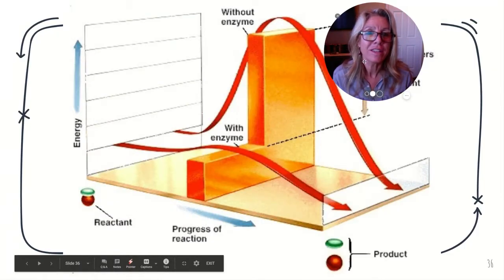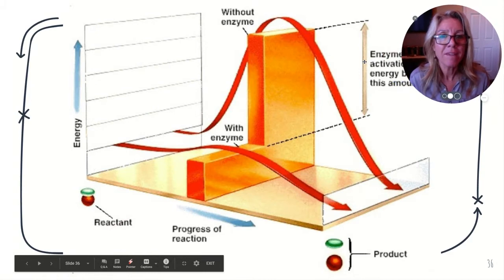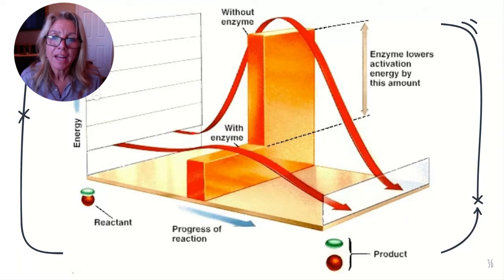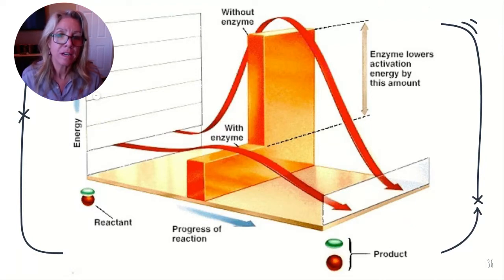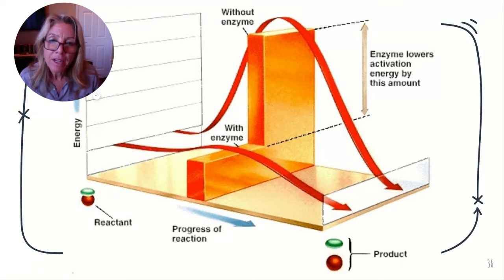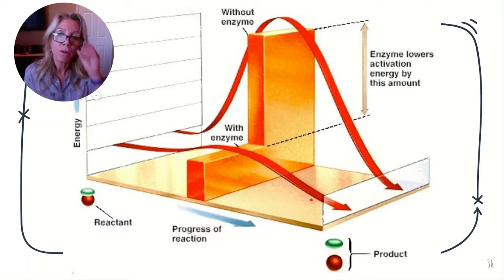On the diagram, you're measuring free energy on the y-axis and progress of the reaction on the x-axis. The blue curve shows the energy of activation without the enzyme — a large hurdle. The tan curve shows it with the enzyme — the hurdle is much smaller, so the reaction is more likely to go forward.